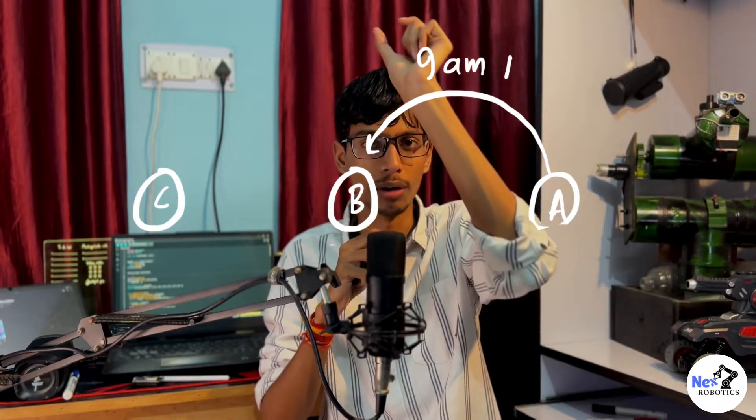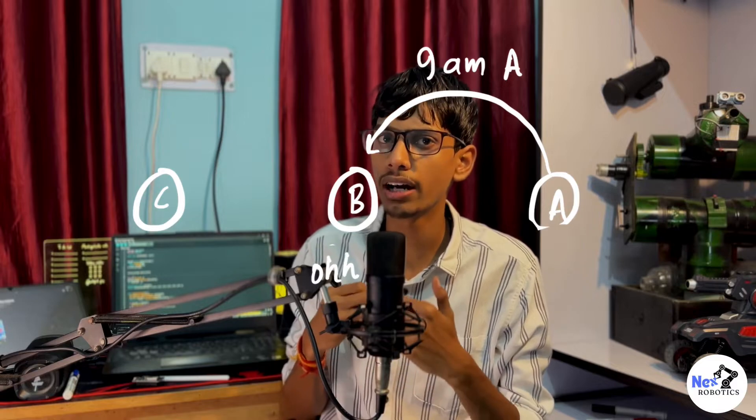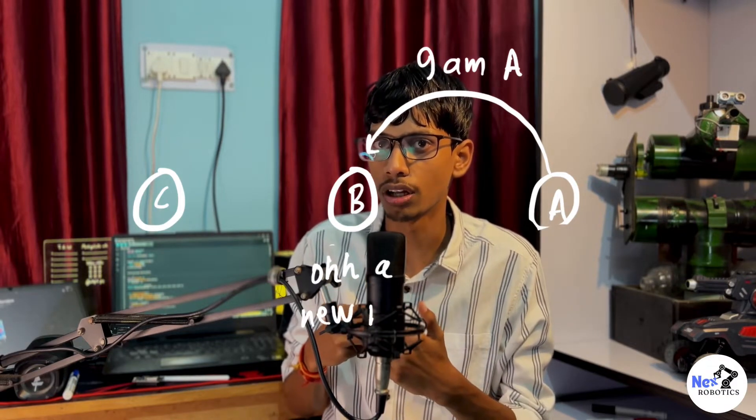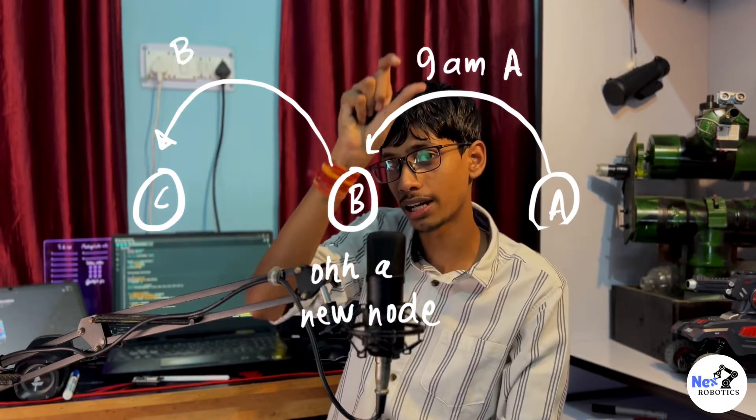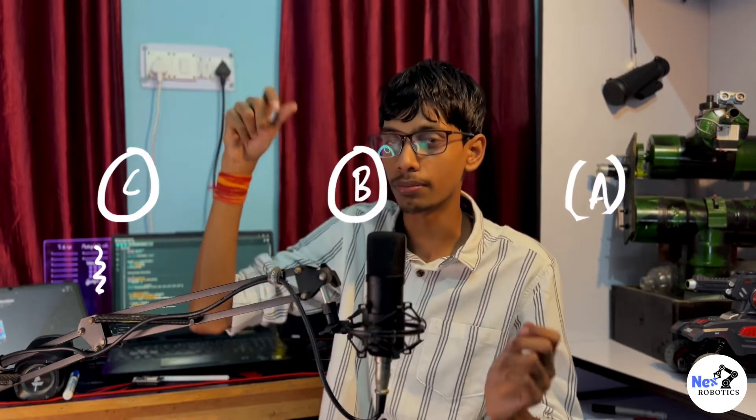So the solution of this is whenever there is a new address or new node, each of the nodes will broadcast or distribute its address to everyone. So like A node will send the address to B node, and B node will say, oh it's a new address, means there is someone else in the network. I should distribute its address to everyone else. So B node will send this address to C.